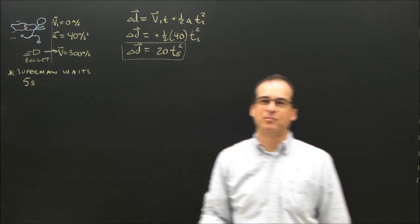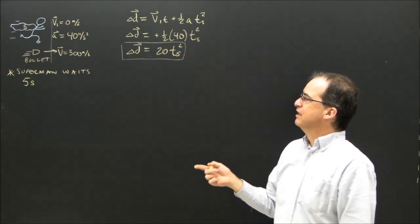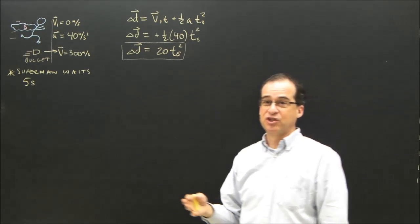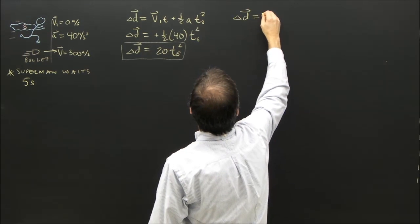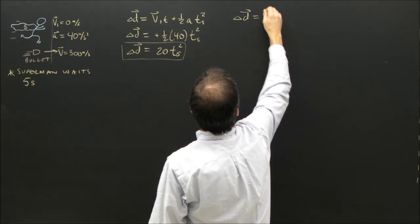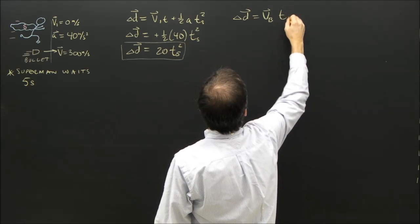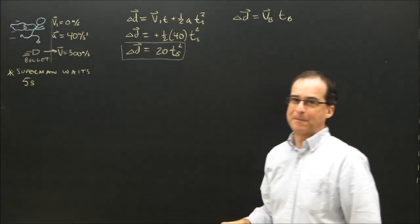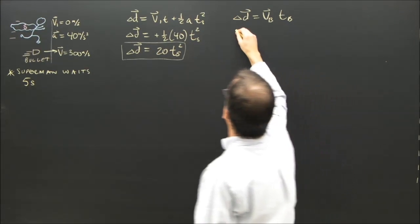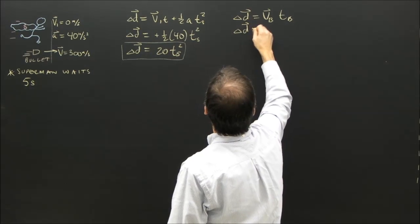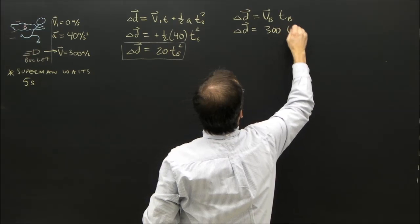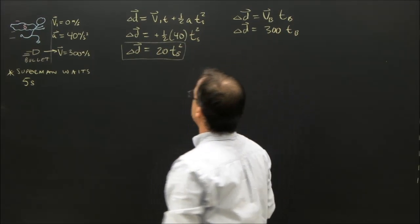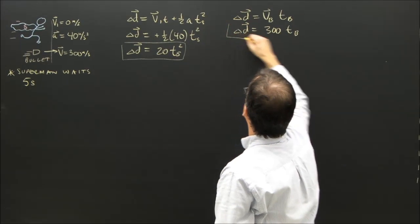Now I'm going to look at the bullet. Well, the bullet is uniform motion. So its equation is V equals V over T. So the distance or the change of position of the bullet is the velocity of the bullet times the time that it takes the bullet to move. Uniform motion. So if I plug in some numbers there, I get that the bullet is 300 times whatever time interval takes place.